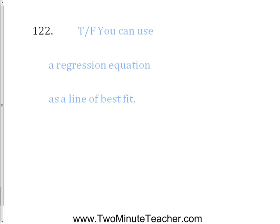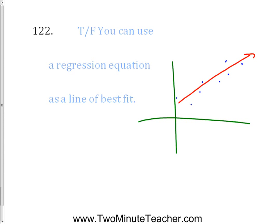True or false: you can use a regression equation as a line of best fit. Yes — if you do a linear regression, it's going to act like a line of best fit. On a TI graphing calculator, you'd go under STAT, enter your data in List 1 and List 2, then go under STAT and calculate linear regression. It gives you the numbers for your slope and y-intercept. A line of best fit and a regression equation are interchangeable terms.